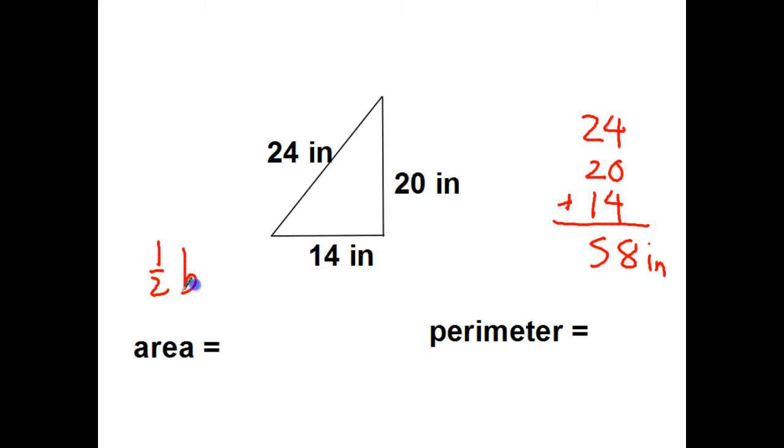Half base times height. I'm using the 14 and the 20. I'm going to take half of the 20 because that's going to get me to 10. I've got 10 times 14 multiplied by 10. Just put a 0 at the end. 140 square inches.